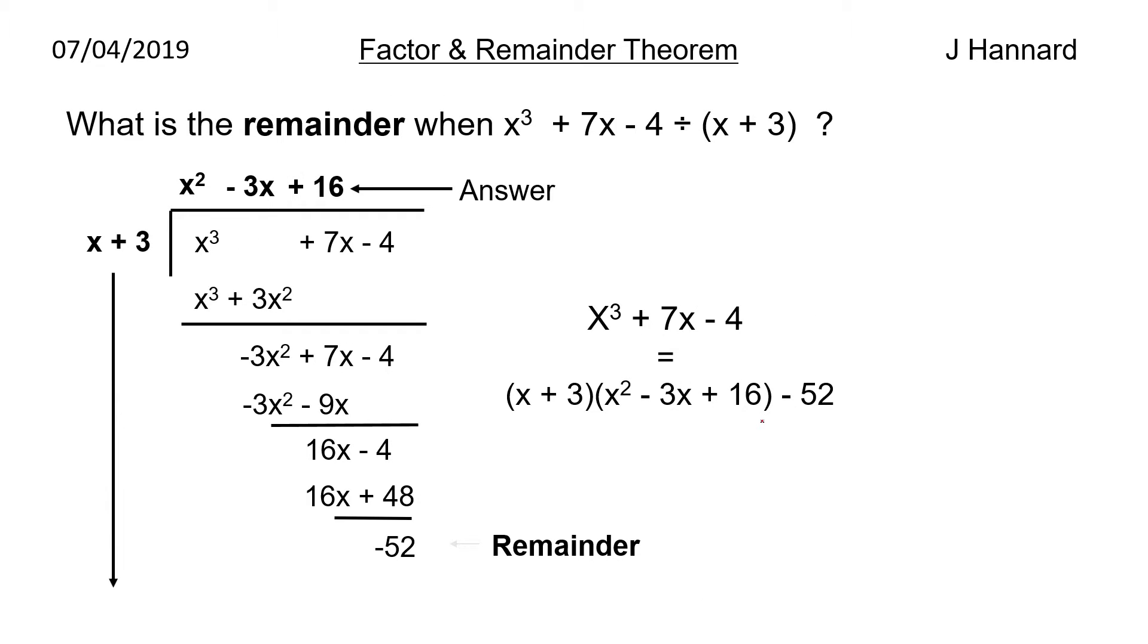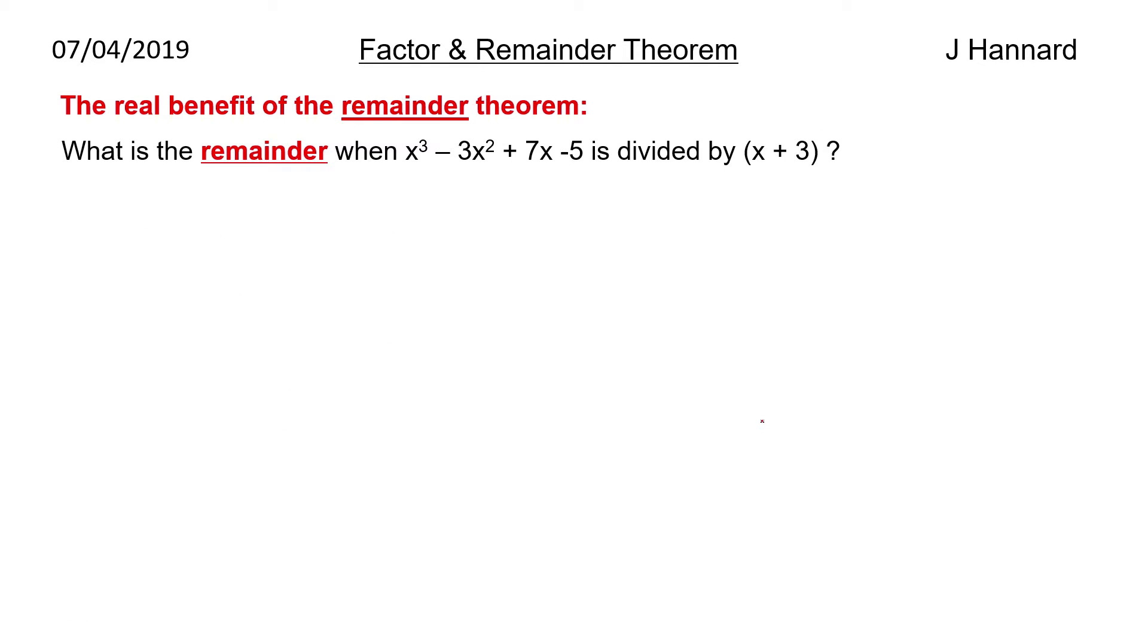Let's have a look at another one. What is the remainder when x cubed plus 7x minus 4 is divided by x plus 3? Using last lesson's work, we divide it using long division and we get a remainder of minus 52. But what if you put minus 3 through the original function? Well you get minus 52. Is that a coincidence? Well of course it's not. That is the remainder theorem.